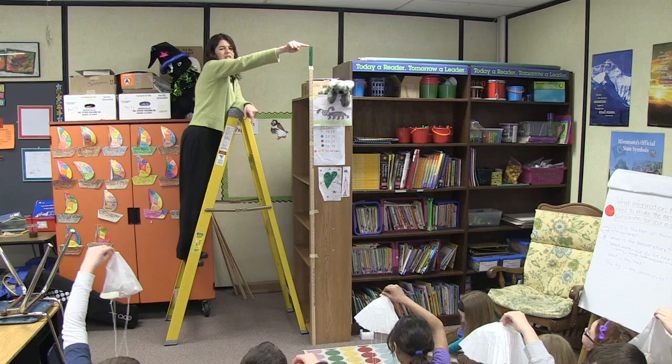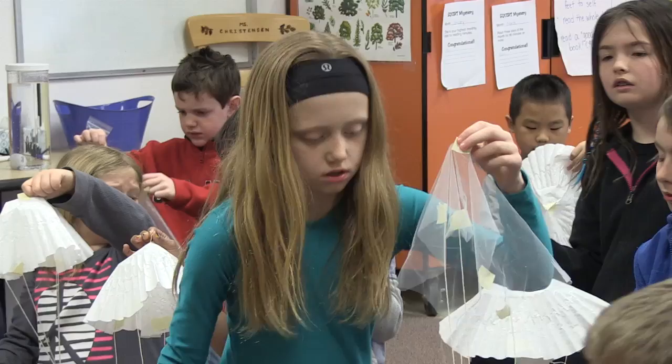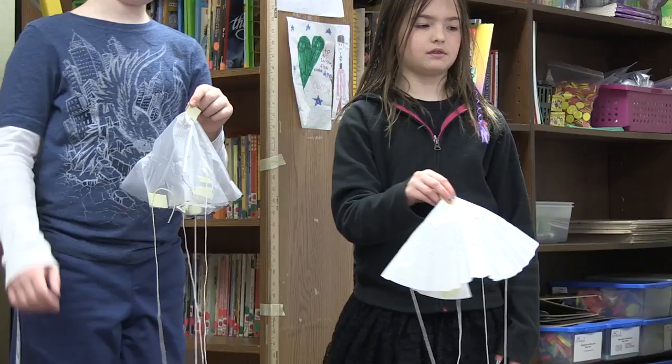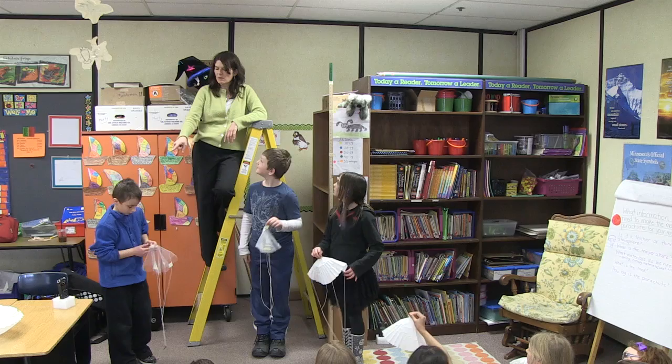Look at what the groups have. What material does Ava have? Coffee filter. What material does Justin have? Plastic. And what material does Ty have? Fabric — a sheer fabric.